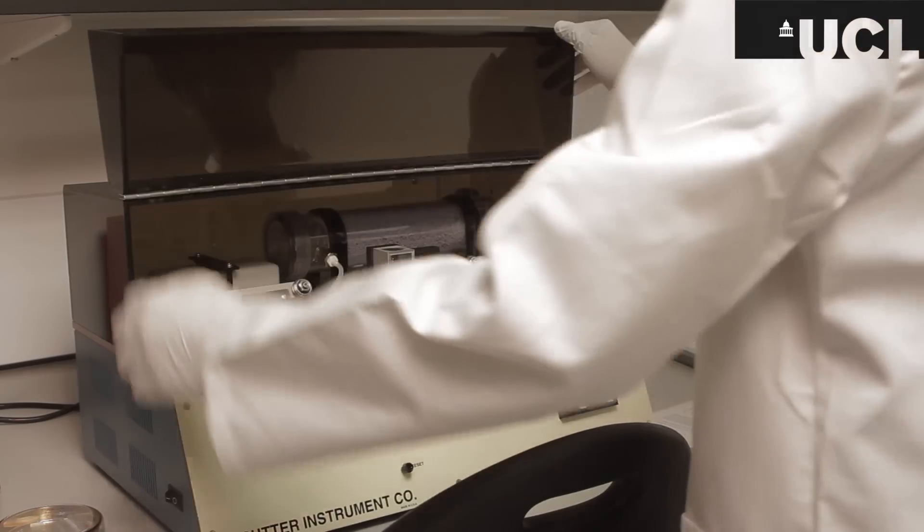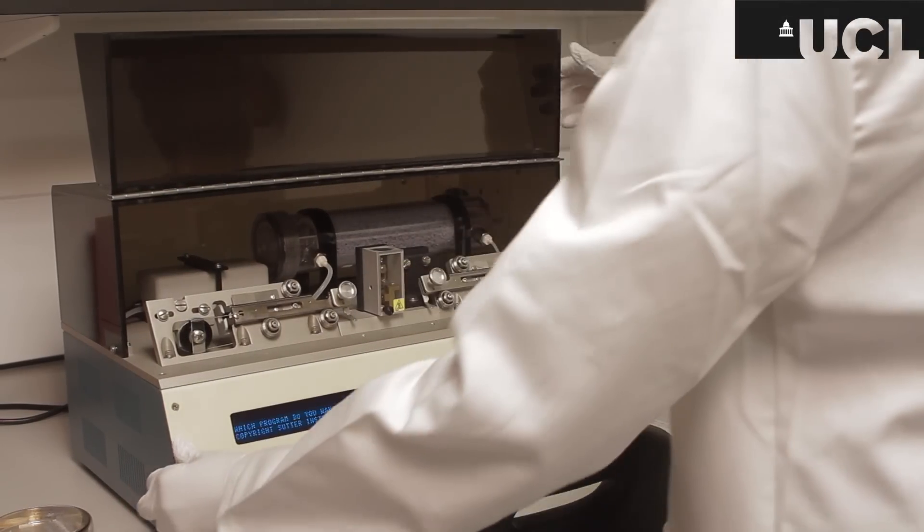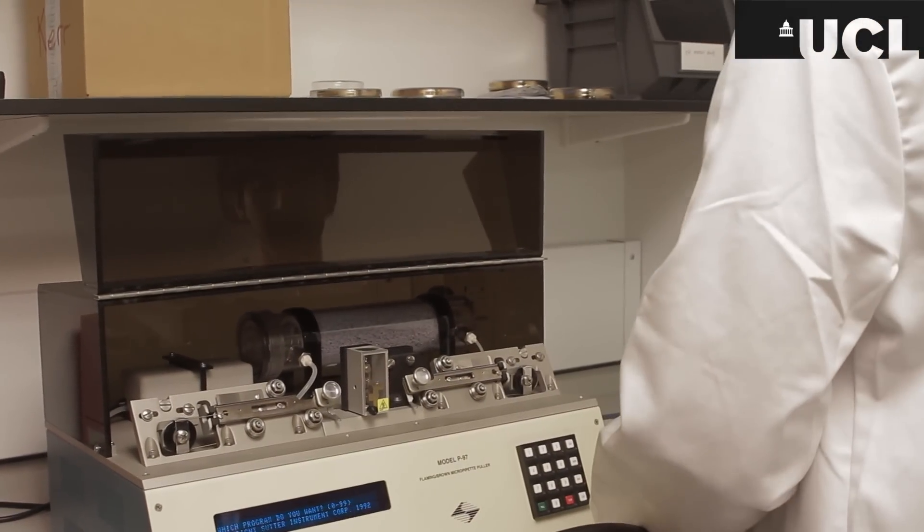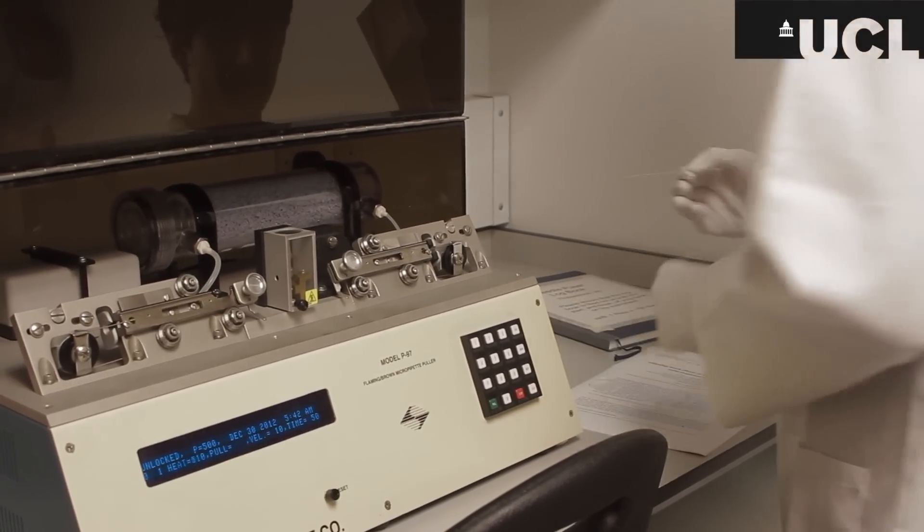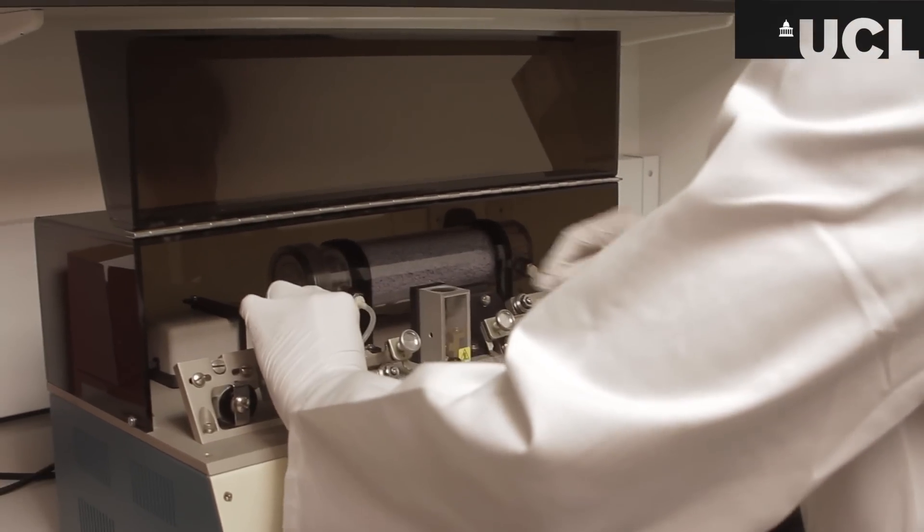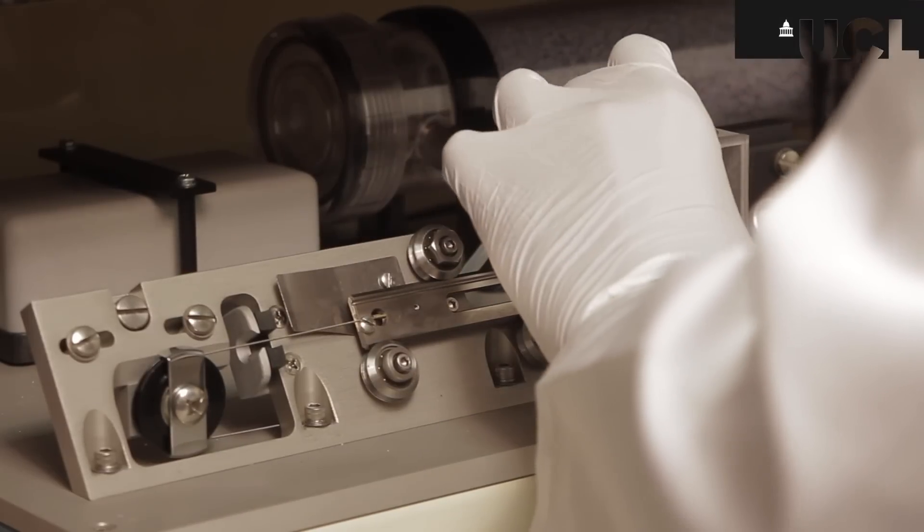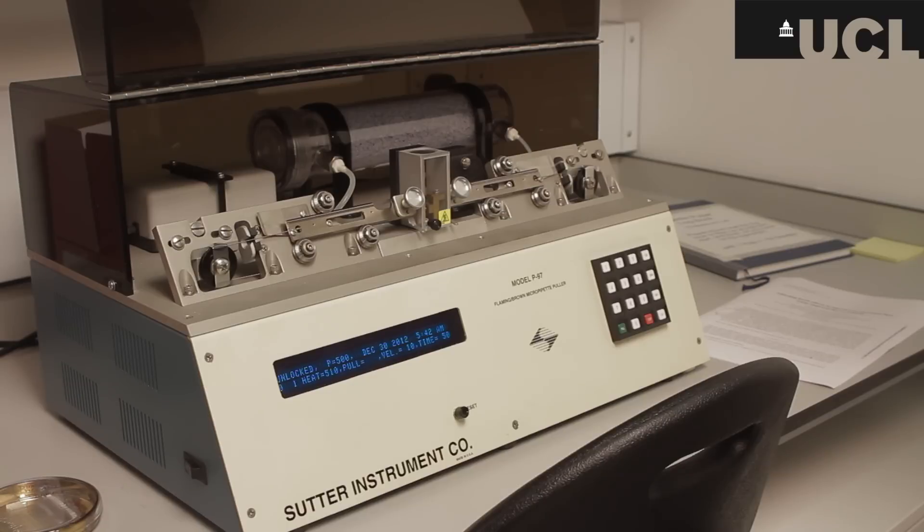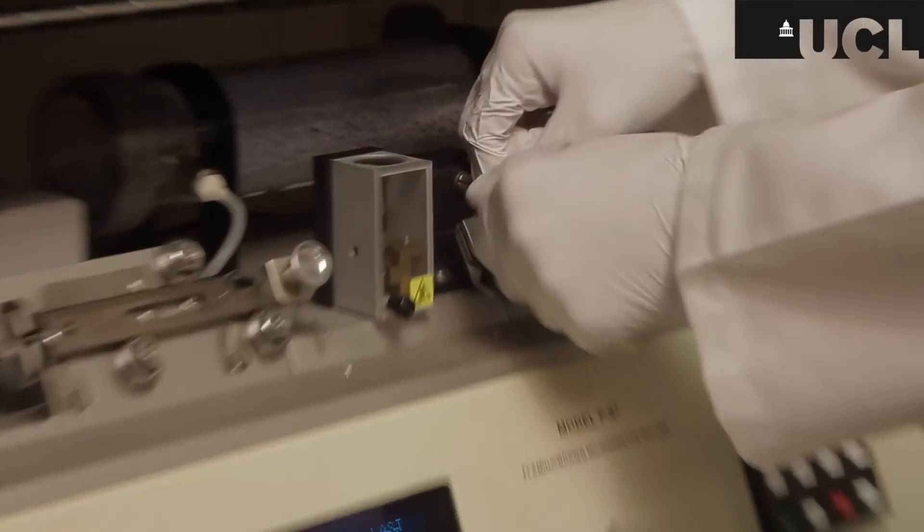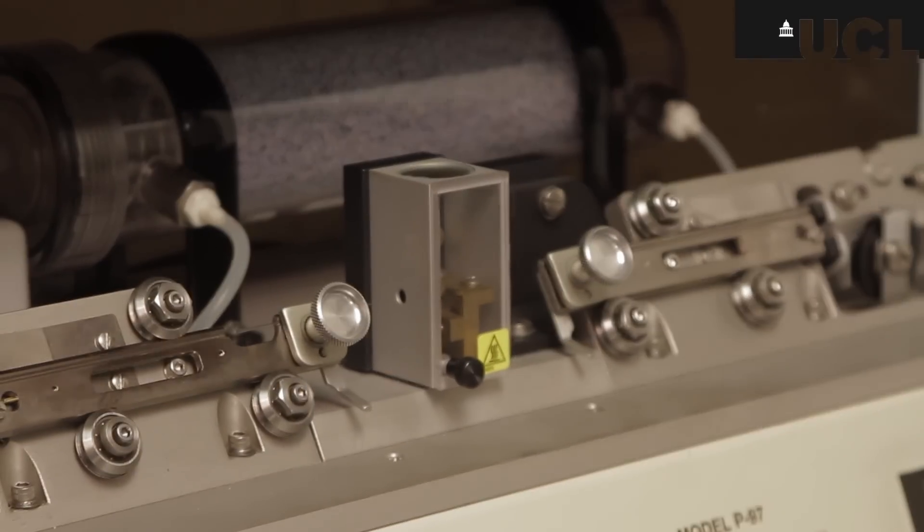So this is the needle puller. We will need this to pull needles from borosilicate glass capillary tubes. One tube will be put in through one side and locked to the other side with a metal filament that heats up to a considerable temperature. The filament in the middle goes red hot three times before finally pulling the capillary tubes apart and then you have two electrospray needles.